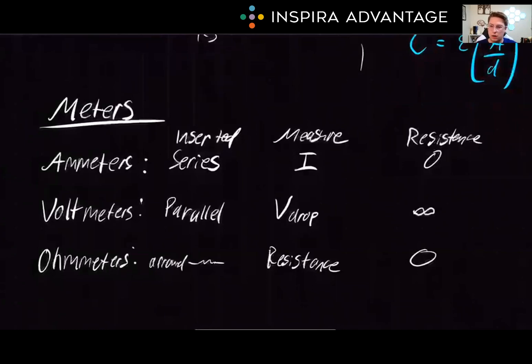Ammeters are inserted into a circuit in series to measure the current and have negligible resistance, whereas voltmeters are inserted parallel, and they are measuring the voltage drop across this area, and they do this by being infinite in their resistance, or we assume infinite.